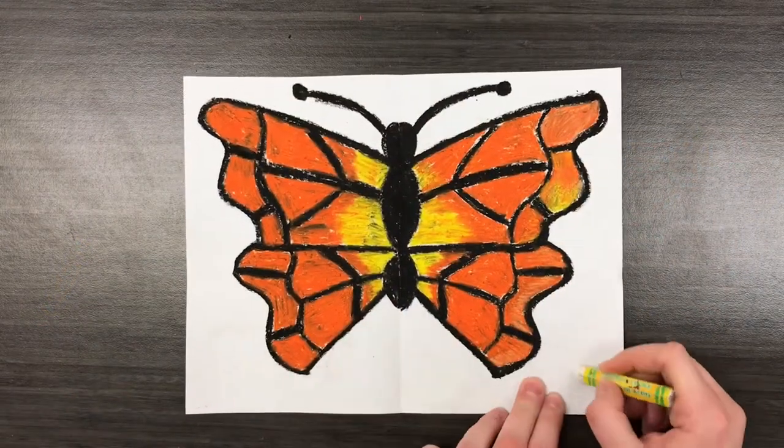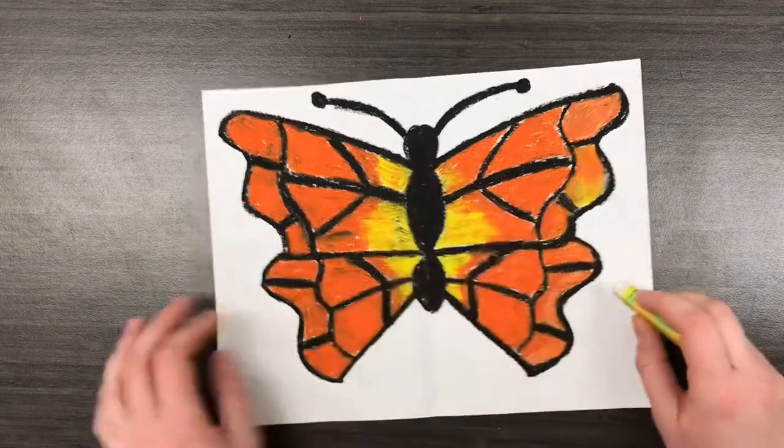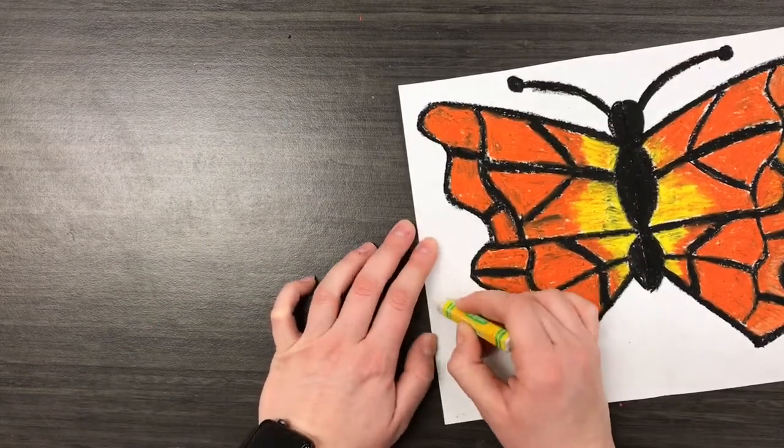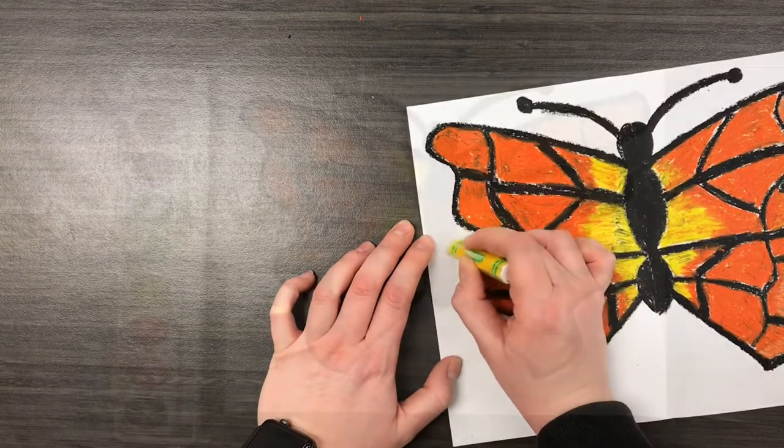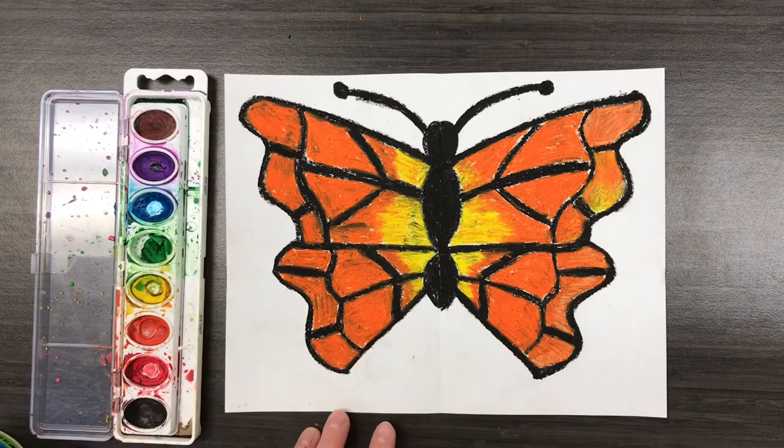This is what it looks like when I'm all finished. Now I'm taking a white oil pastel and I'm drawing some shapes, lines, and designs in the background. Now we can't see them, but when we paint over the background, it's going to create what's called an oil or wax resist.